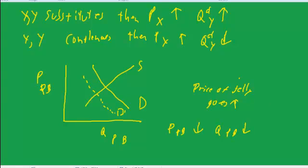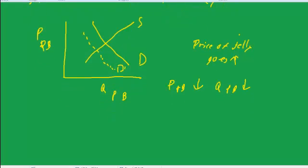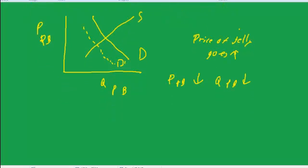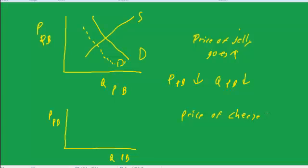Now if we're talking about substitutes, let's say we had cheese as a substitute, as a sandwich filler for peanut butter and jelly. So peanut butter, quantity of peanut butter, and now we'll say the price of cheese goes up.